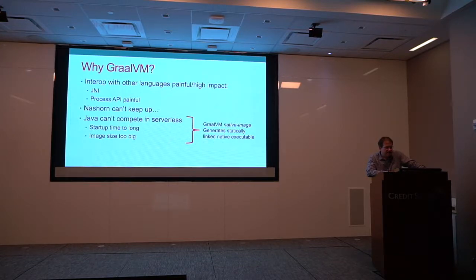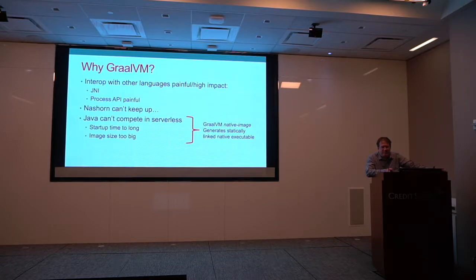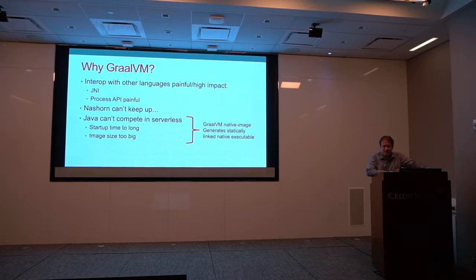Java can't currently compete effectively in serverless. The startup time is too long for the JVM and the image size is too large. On AWS Lambda, JavaScript starts up in a tiny amount of time with a small footprint, while the Java JDK is 300-plus megabytes and requires at least 64 megs of RAM to start. Now with the native image from GraalVM, Java can actually effectively compete in that arena with native startup times and small memory and disk footprints.